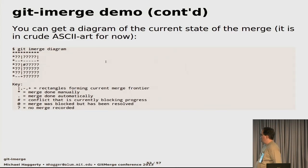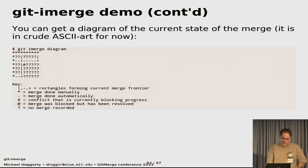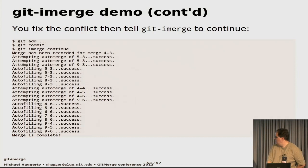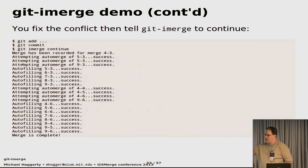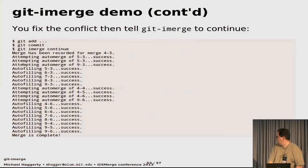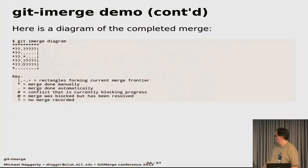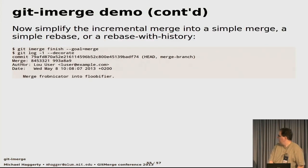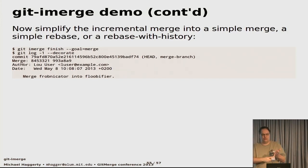There's a crude diagram functionality showing the state of your merge — question marks are merges that could be skipped, rectangles are mergeable areas, and hash marks show where conflicts are. You fix the change, git add, git commit, then type git-i-merge continue and it goes on. It might find more conflicts as it uncovers more of the diagram. When it's done, you can see from the diagram that the bottom-right corner is filled in, meaning the merge is finished. Then you run git-i-merge finish and specify your goal: simple merge, rebase, or rebase with history.